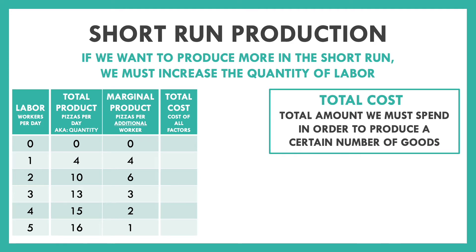Fixed costs are sometimes referred to as your overhead. Let's say you pay $25 in rent for the day. So even when you hire no workers, you still have to pay $25. But let's say you also pay $25 for every worker you hire. So if you hire one worker, you have the $25 rent plus $25 for that worker — $50 in total costs. With a second worker: $25 rent plus $25 times two workers equals $75. With three workers: three times $25 is $75 plus $25 rent equals $100. The total cost is $25 plus $25 per worker.